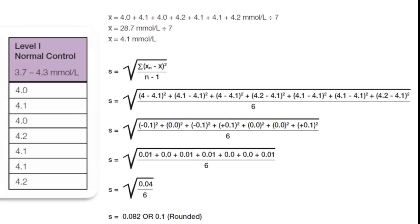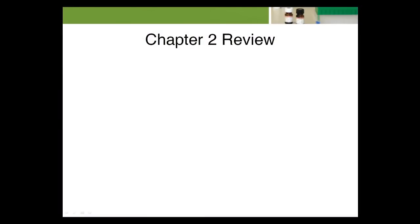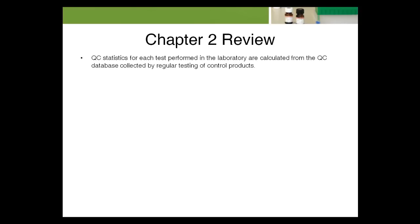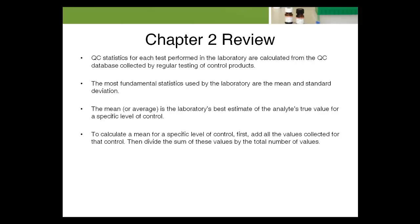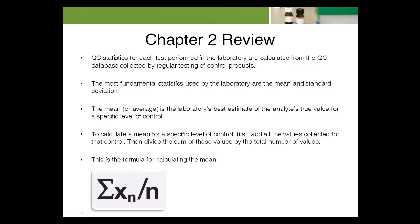Now that the amount of precision is known, some assumptions can be made about how well this test is performing. You've reached the end of this module. Let's review some basic points. QC statistics for each test performed in the laboratory are calculated from the QC database collected by regular testing of control products. The most fundamental statistics used by the laboratory are the mean and standard deviation. The mean or average is the laboratory's best estimate for the analyte's true value for a specific level of control. To calculate a mean, first add all the values collected for that control, then divide the sum by the total number of values.